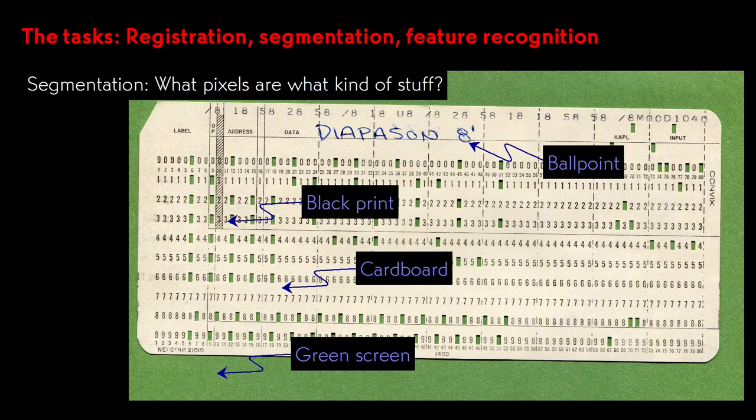Segmentation, as the name suggests, divides an image into pieces. Generally, the pieces will represent objects in the image. Here we will want to recognize what is green screen and what is cardboard, taking into account that the cardboard has both printing and handwriting on it.